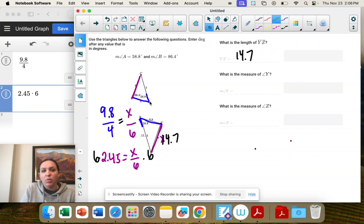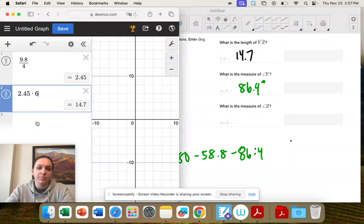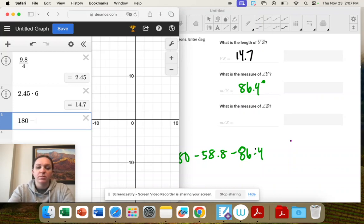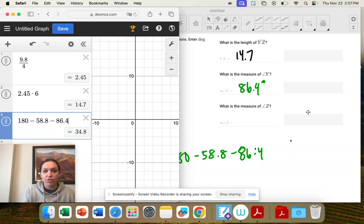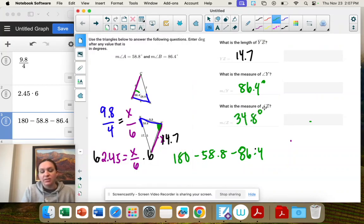Okay, measure of y and measure of z. So remember, we said the angle across was the one that went with 6. That means this is 86.4 degrees. And then they all add up to 180. So I'm going to take 180 minus 58.8 minus 86.4, which is 34.8 degrees.